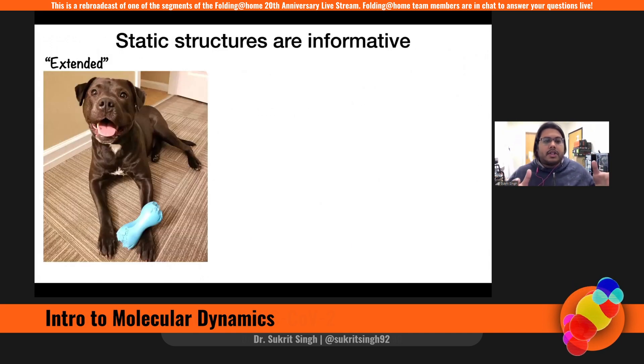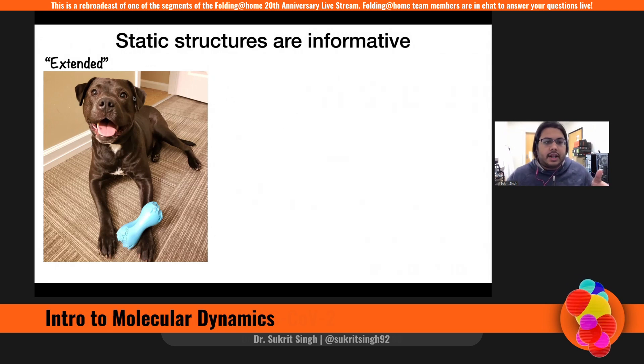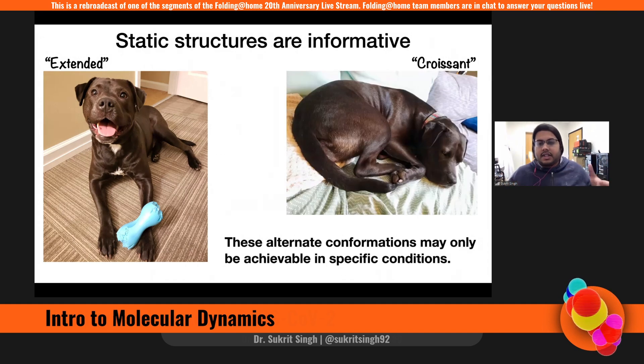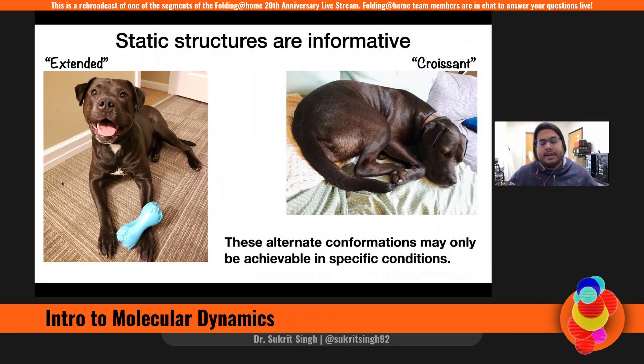So if we wanted to understand Coco's behavior, we can learn a lot about her from this picture. She's got a head, she's got four legs, she's got a tail, she looks pretty happy. However, this isn't the only shape Coco can exist in. In fact, she exists as a croissant sometimes and is more folded up here instead of the extended conformation on the left. And these conformations that are alternative to one another may only be achievable in specific conditions or upon certain inputs.